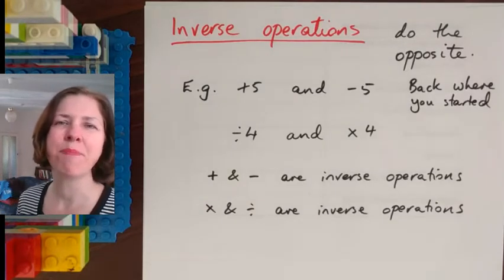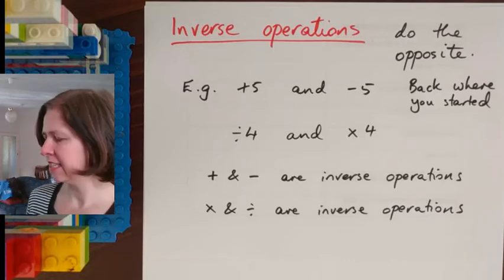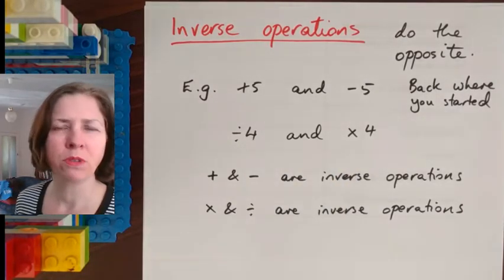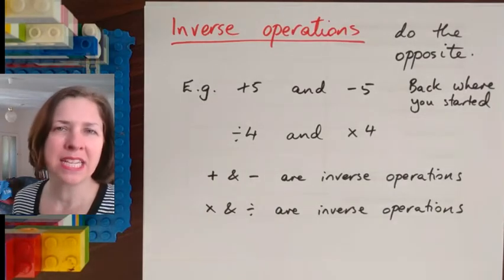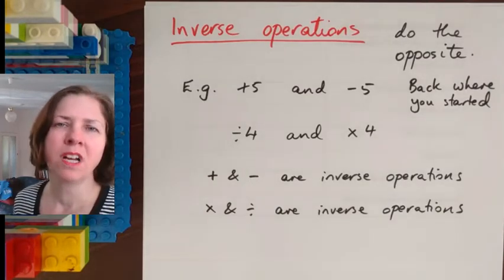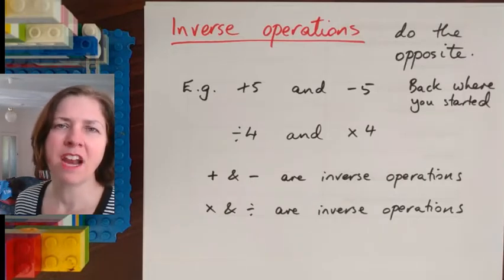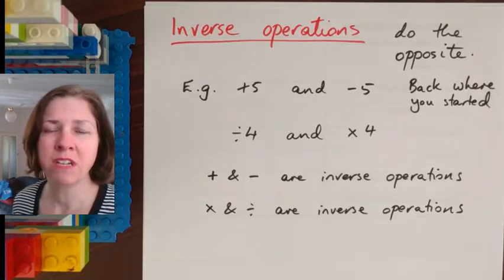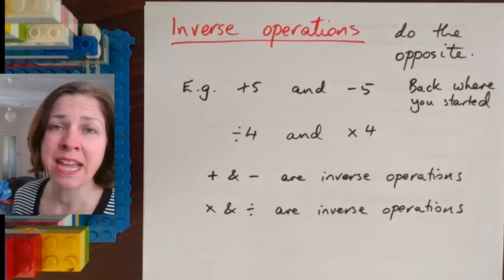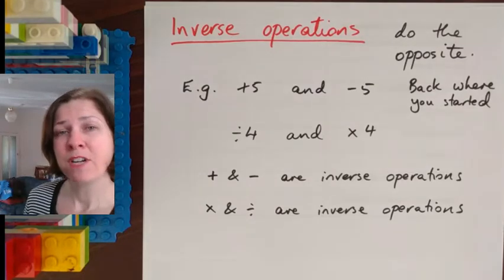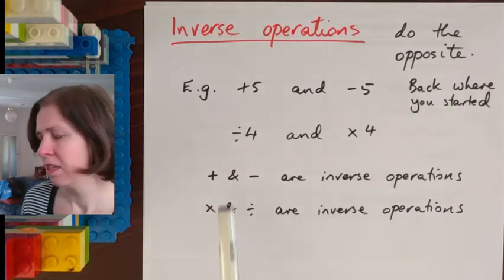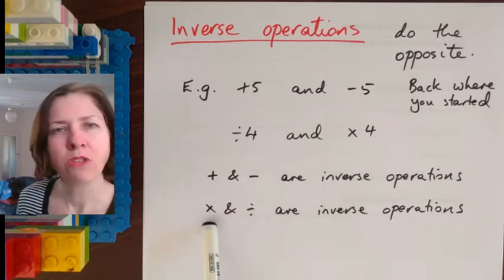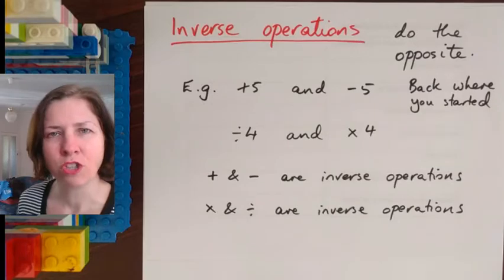That's the whole point of inverse operations. They take us back to where we started. So the next example is if I divide by 4 and then I multiply by 4. So if I take the number 20 then I divide it by 4 I get 5 then I multiply by 4 I'm back where I started at 20 and that's what inverse operations do. Now there are lots of pairs of inverse operations but for now what we're going to focus on is the two we've just talked about. Addition and subtraction are inverse operations. Multiplication and division are inverse operations.